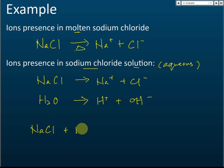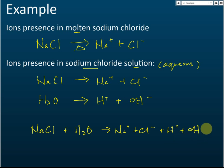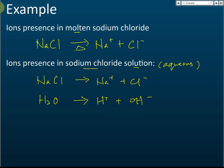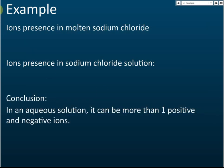We can write: NaCl + H₂O gives Na⁺ + Cl⁻ + H⁺ + OH⁻. Usually we write this as two separate equations, but writing it this way is also acceptable. The important thing is knowing which ions are present — that is the major difference between molten sodium chloride and sodium chloride solution.